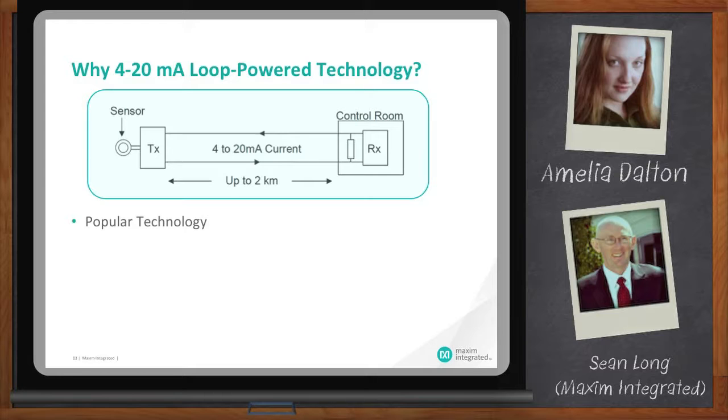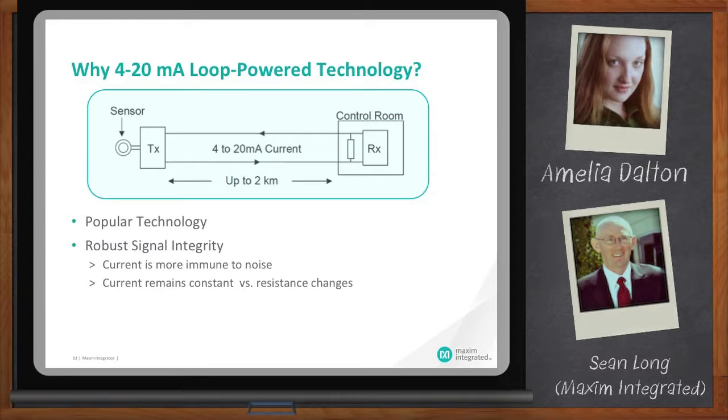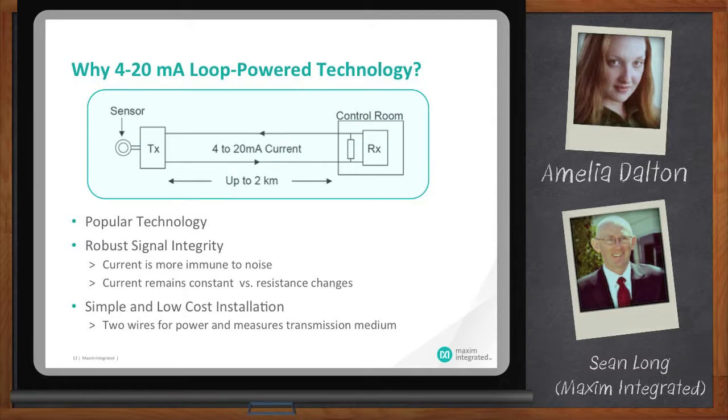Typically, you'll have sensors in hostile environments a long way away from the controller, maybe up to a mile or two. Okay. And in this case, we would use a 420 milliamp loop. All right, Sean, but how does this translate into an actual system? What's the setup look like? So you're going to have two or three different components to this system.